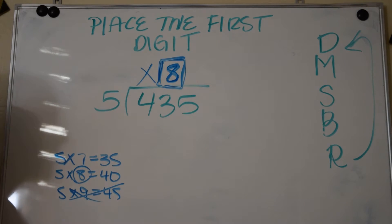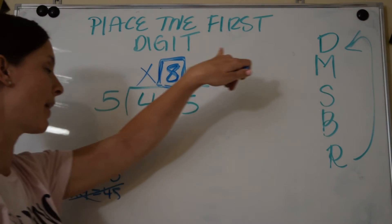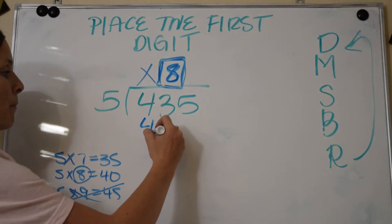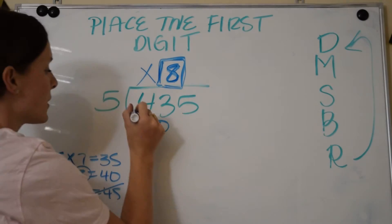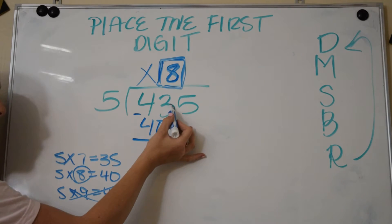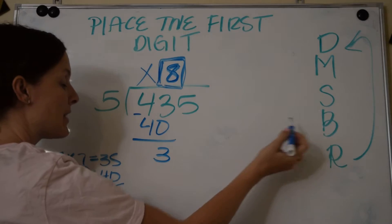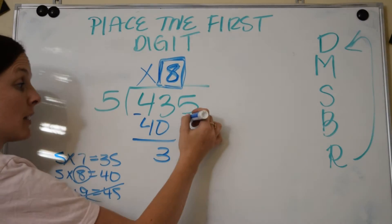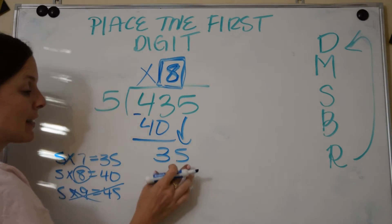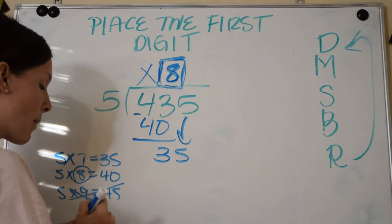And now we follow the steps. Now we multiply: 8 times 5 is 40. Then I subtract: I have to subtract 43 minus 40, which would give me 3. Then I bring down one digit at a time; it happens to be a 5.